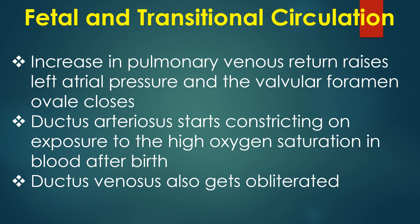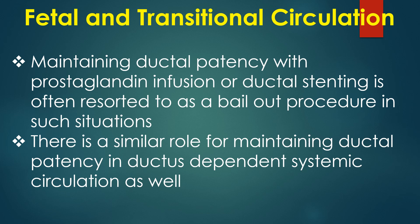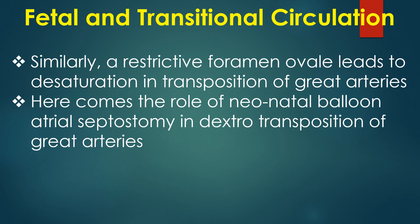Increase in pulmonary venous return raises left atrial pressure and the valvular foramen ovale closes. The ductus arteriosus starts constricting on exposure to the high oxygen saturation in blood after birth. Ductus venosus also gets obliterated. Transitional circulation is relevant in congenital heart diseases. Closure of the ductus arteriosus in the early neonatal period can lead to a marked fall in oxygen saturation in cyanotic congenital heart disease with low pulmonary blood flow. A restrictive foramen ovale leads to desaturation in transposition of great arteries.